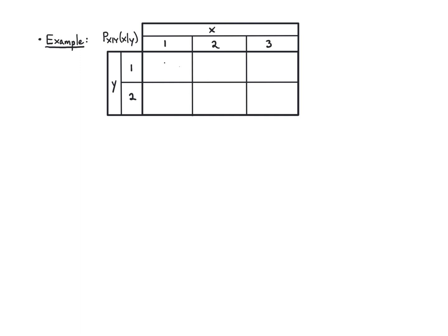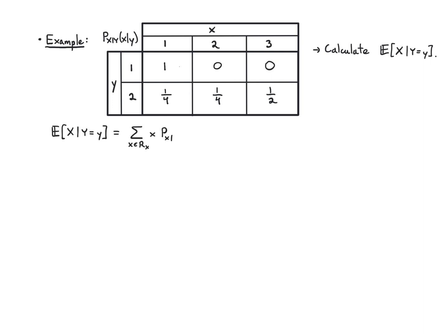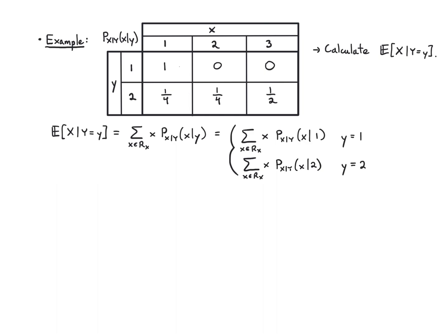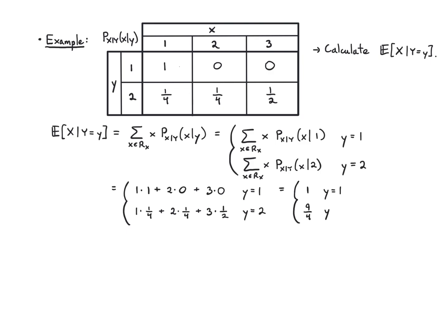Let's start with a table. Here's a simple conditional PMF table. I want to calculate E of X given Y equals little y. I just sum up x times the conditional PMF of x given y, and in this case I'll have two different cases: where Y equals one and where Y equals two. For Y equals one, it's one times one plus two times zero plus three times zero. The second row has values one-fourth, one-fourth, and one-half for the conditional PMF. I get one when Y equals one and nine-fourths when Y equals two.